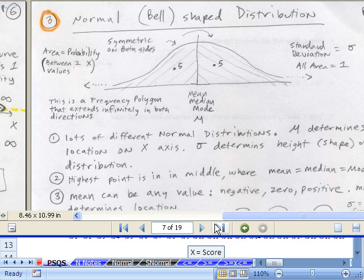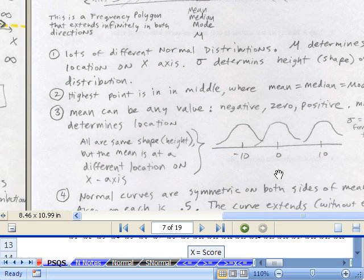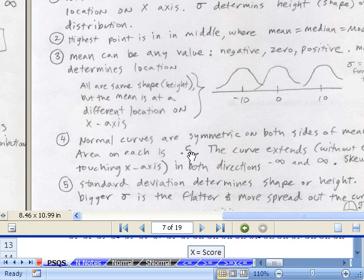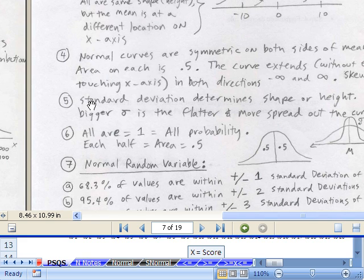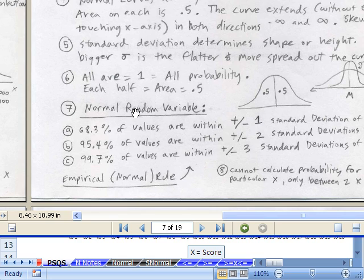Here, I want to just go through this list of important characteristics of our probability distribution. There's lots of different normal distributions. Mu determines the location and standard deviation, the height or the shape. Highest point is in the middle, mean, median, mode. Mean can be any value. It could be negative 10, 0, or 10. Normal curves are symmetric. Both sides are 0.5. All the area underneath is 1. Standard deviation determines the shape or height. All the area is 1. Half of the area is 0.5.